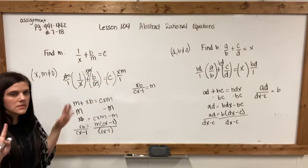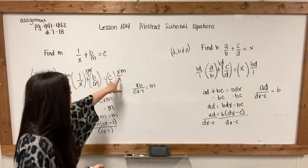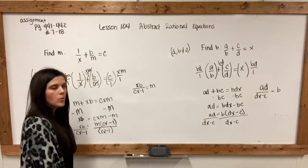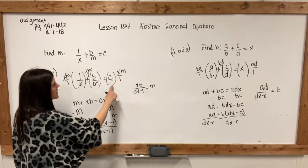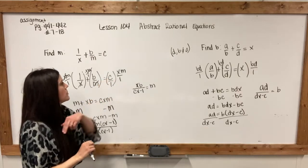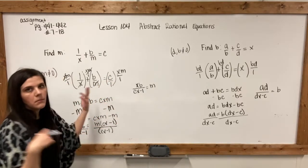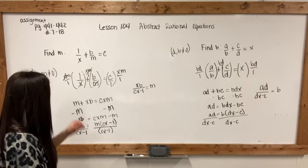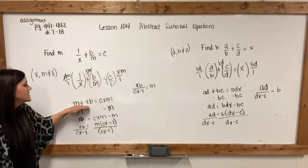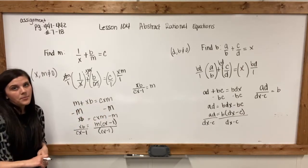Or you could have bx — it doesn't matter. And then this last one, I'm going to put c over 1. There's nothing in common for the denominator, so we would just multiply, giving us cxm. So now I'm left with m + xb = cxm.